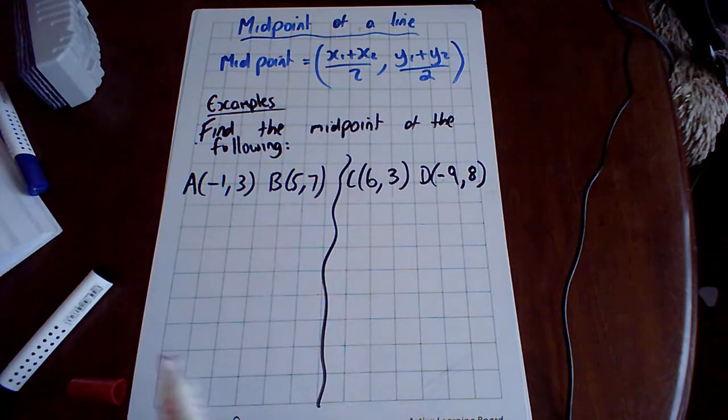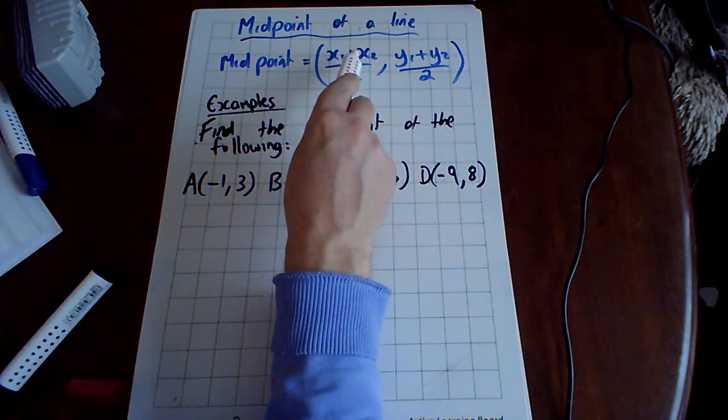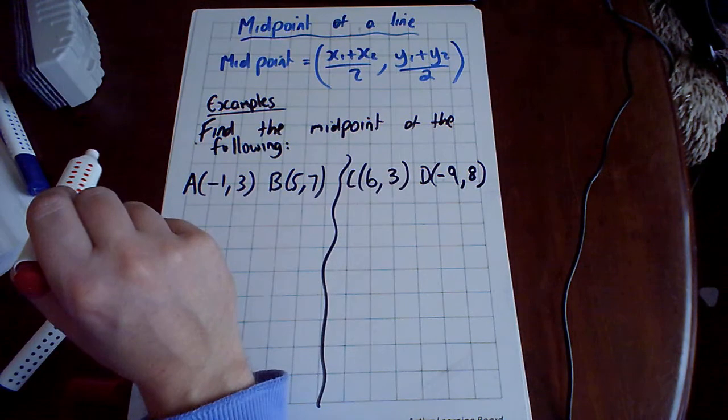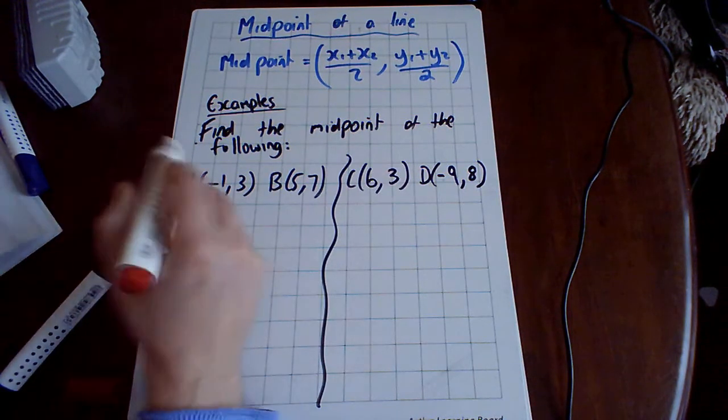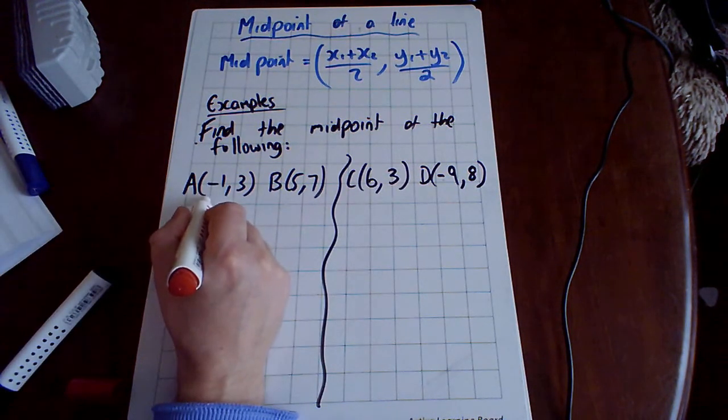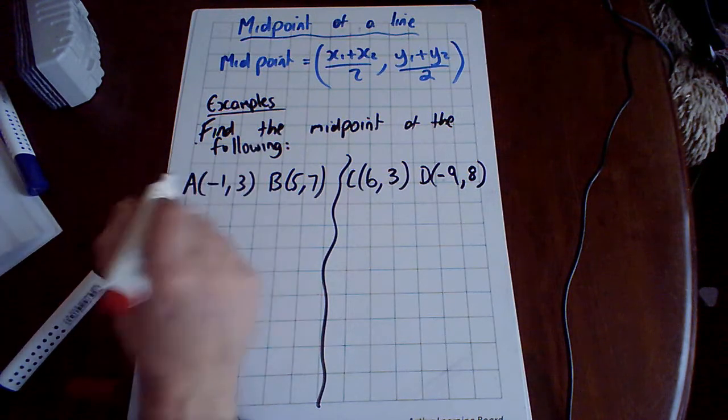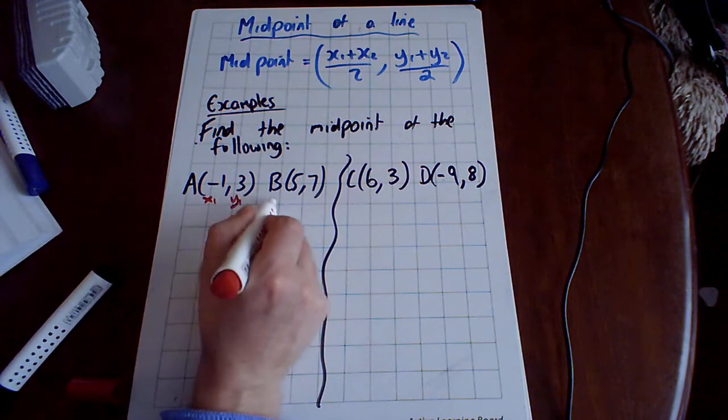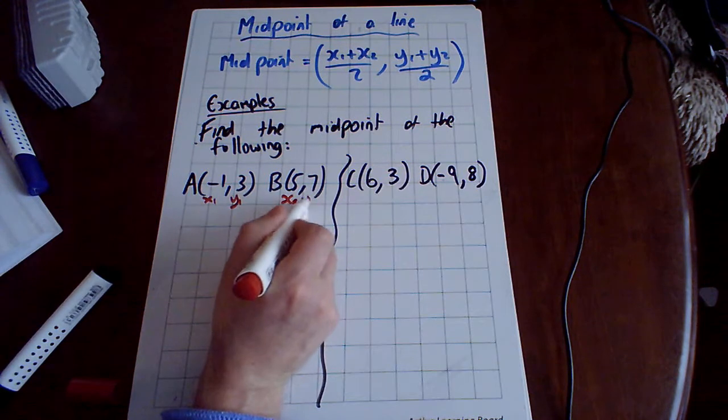You don't have to remember it. All it means is you add the two x's together and divide by two, add the two y's together divide by two, and that's all it is. We always start off these questions by labeling our things, so we've got two examples here: x1, y1, x2, y2.